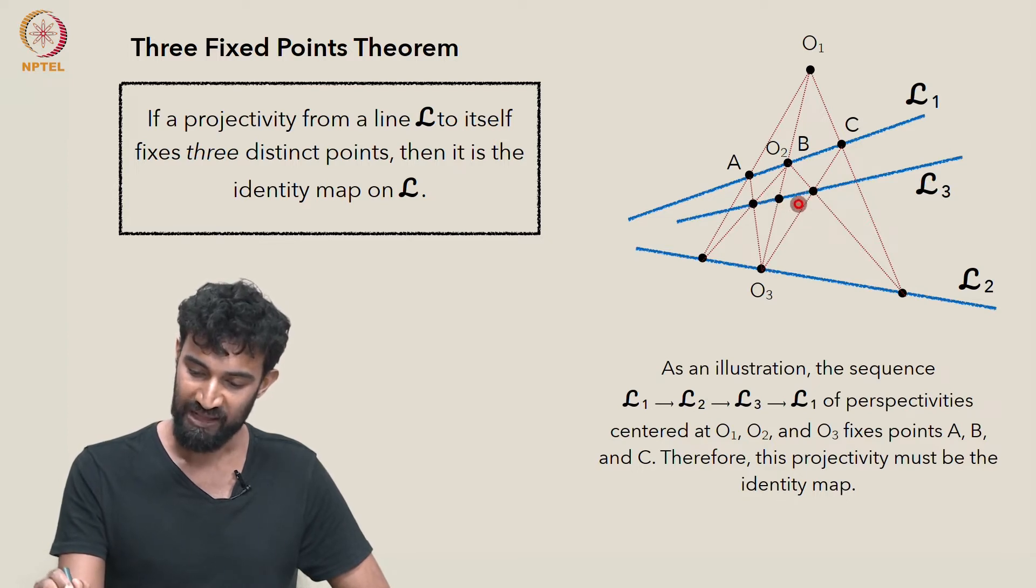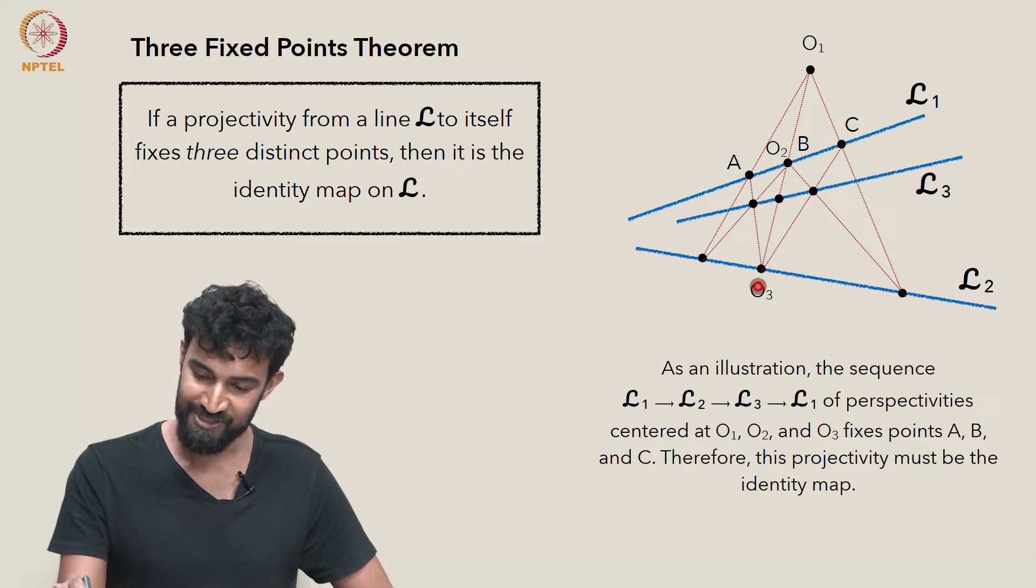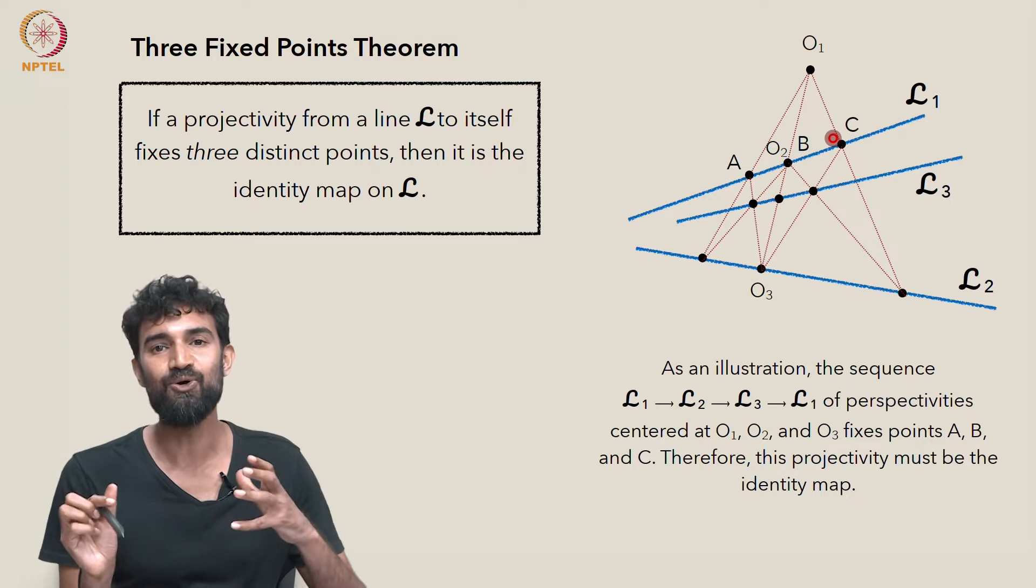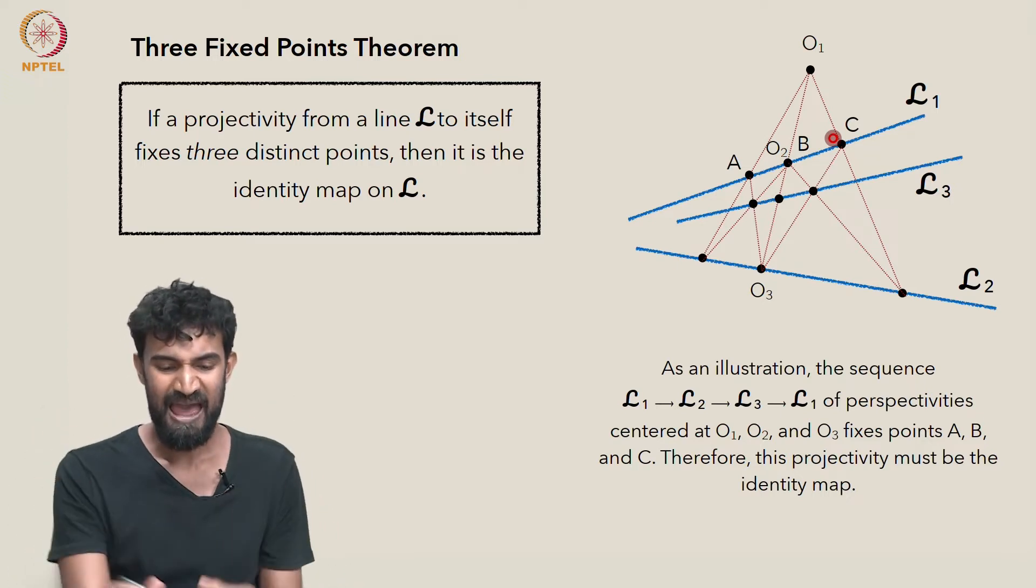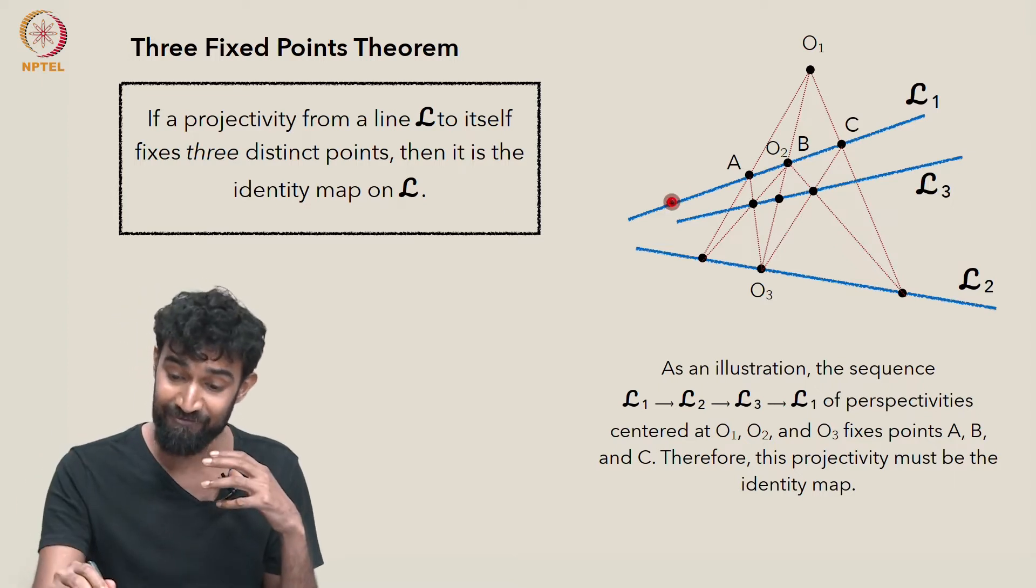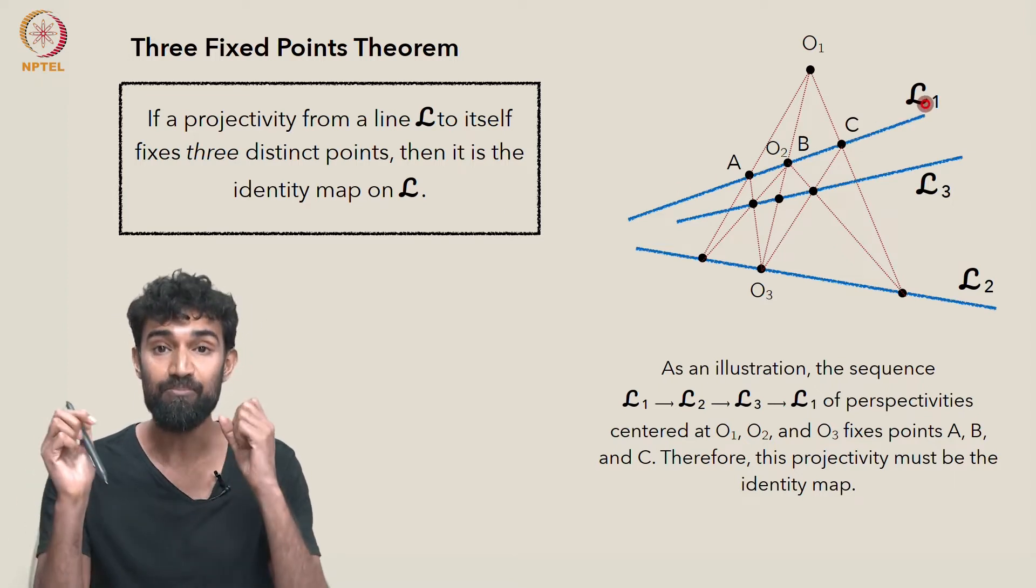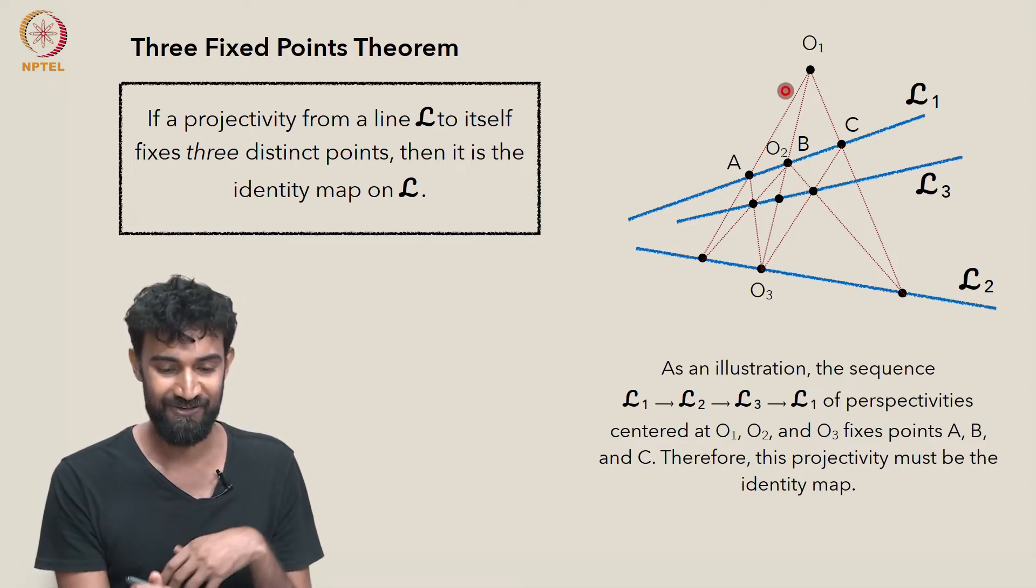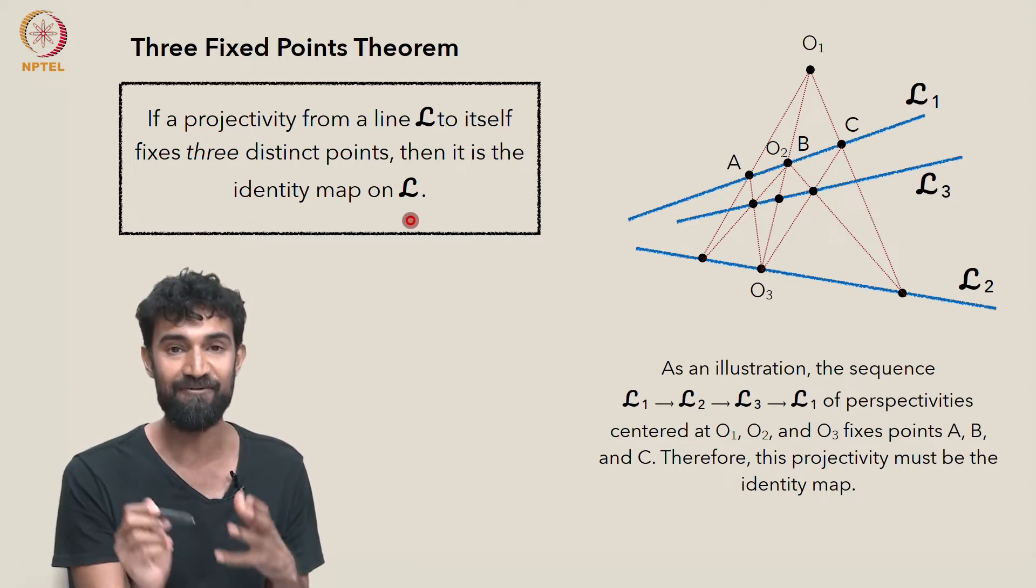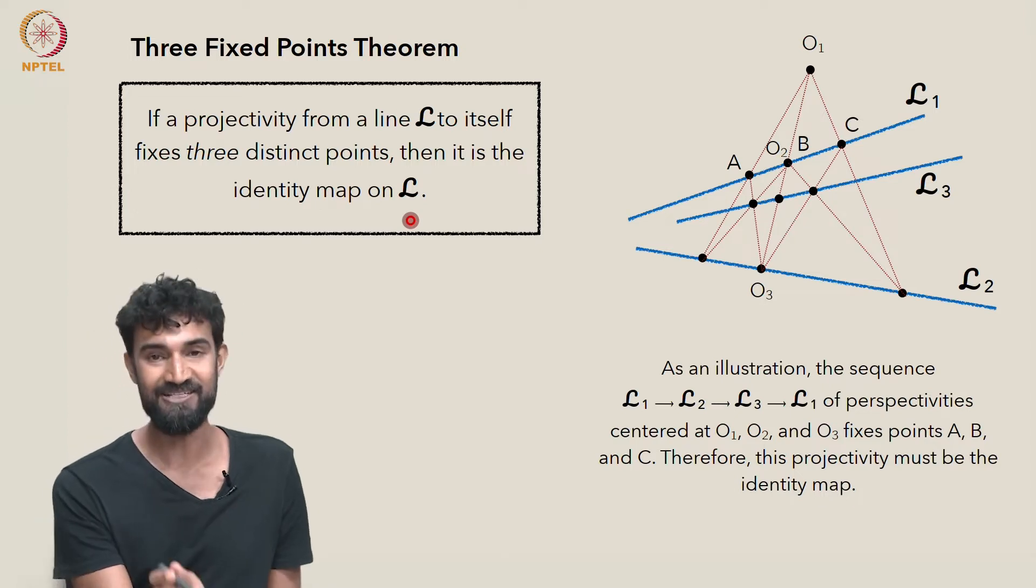Finally, O₃ is going to push these three points back to L₁, back to A, B, and C. So you can see that A, B, and C are fixed by this sequence of perspectivities. And by the Three Fixed Points Theorem, that means every single point in L₁ must be fixed by this sequence. If it fixes three points, it has to fix every point. That's the content of this theorem.